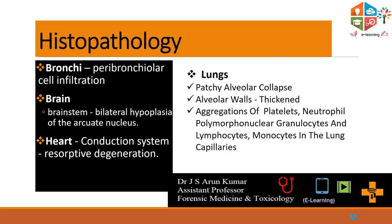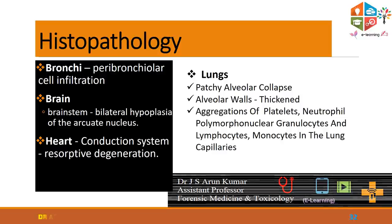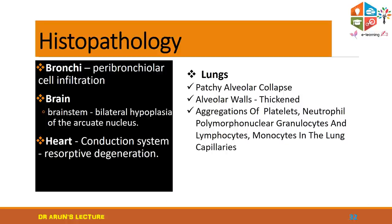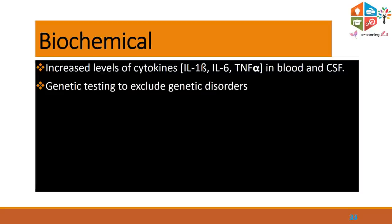Histopathological findings: bronchi may show peribronchiolar and bronchiolar cellular infiltration. In the brain, bilateral hypoplasia of the arcuate nucleus can be seen. In the heart, conduction system perinodal fibrotic degenerations can also be seen. In the lungs, patchy alveolar collapse, thickened alveolar walls, and aggregation of platelets, neutrophils, and other inflammatory markers can be seen. Regarding biochemical estimations, increased levels of cytokines, especially interleukin-1 beta, interleukin-6, and tumor necrosis factor alpha in blood and CSF have been demonstrated. Genetic testing is primarily done to exclude any genetic disorders.